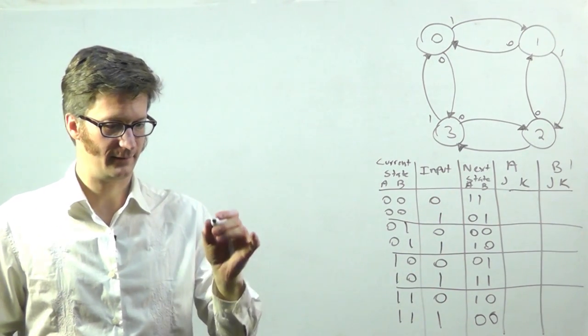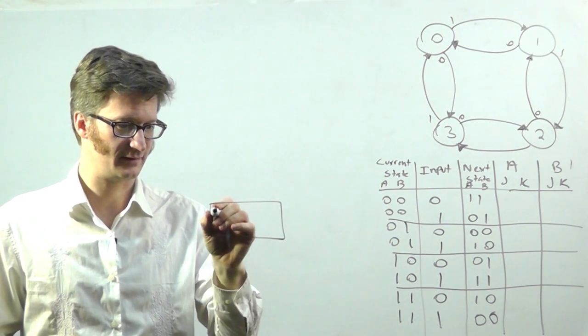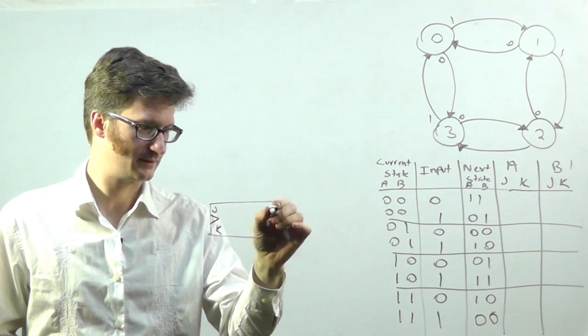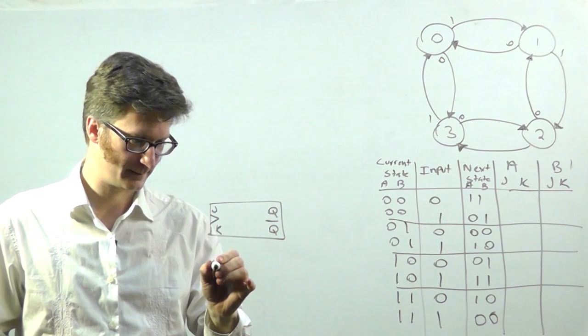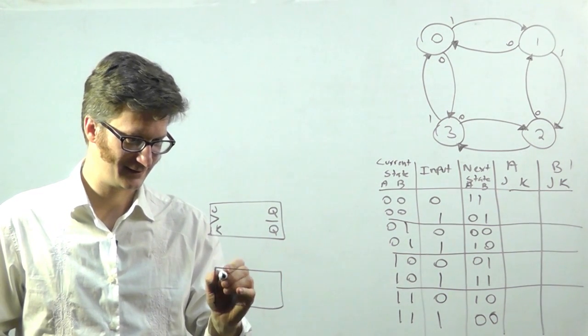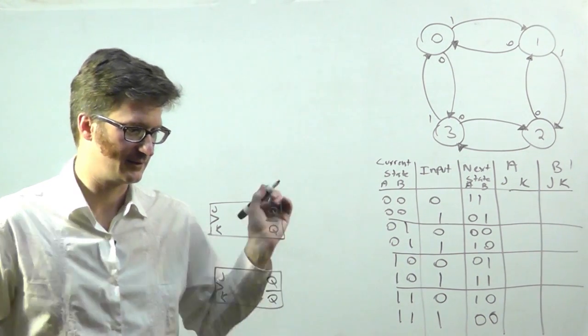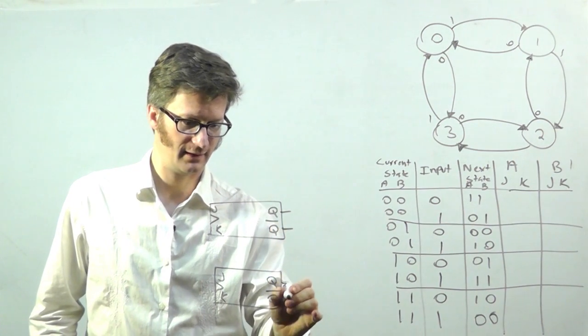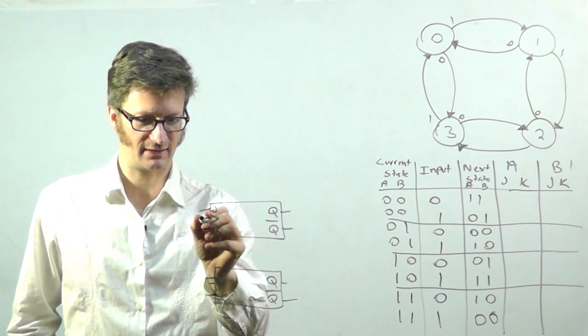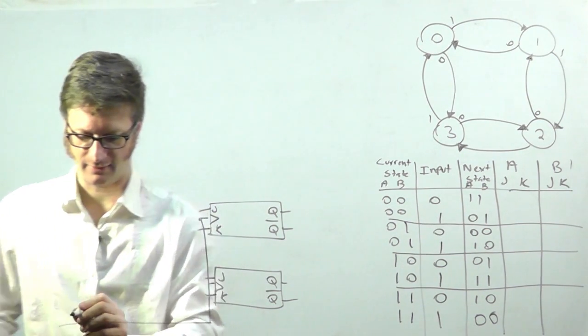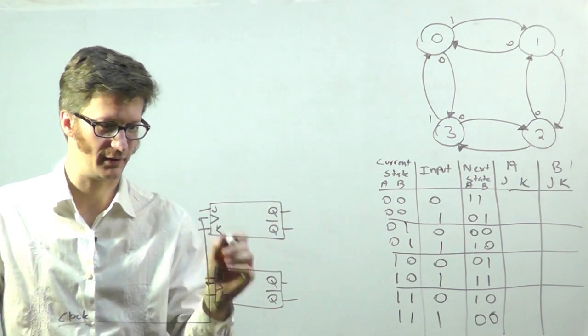Let's just draw the JK flip-flops for this. That's what they look like, at least on the schematic. I'll start out by bringing my clock down here, and we'll just pause there for a minute.